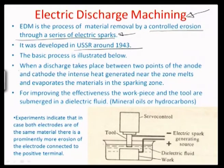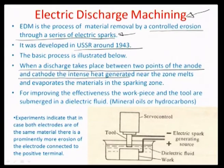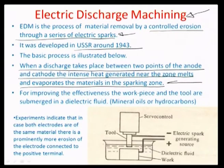When a discharge takes place between the anode and cathode, the intense heat generated near the zone melts and evaporates the materials in the sparking zone. If the melting rate at the tool electrode is lower than at the workpiece electrode, the process is amenable for machining. EDM is designed so that the ion column established between the tool electrode and workpiece electrode damages the workpiece more than the tool.